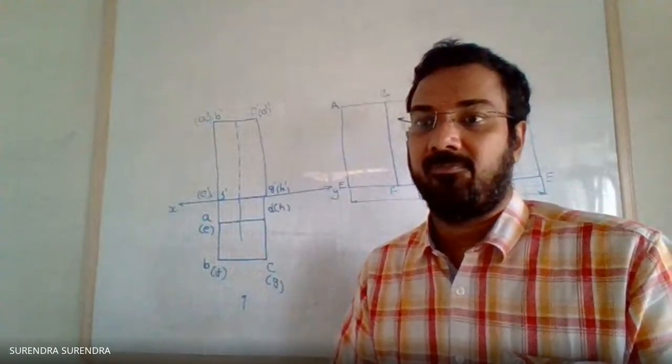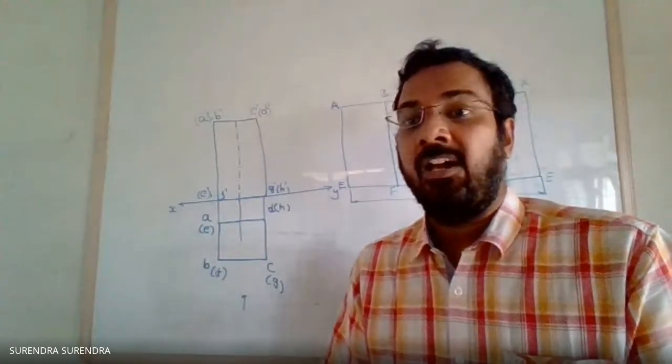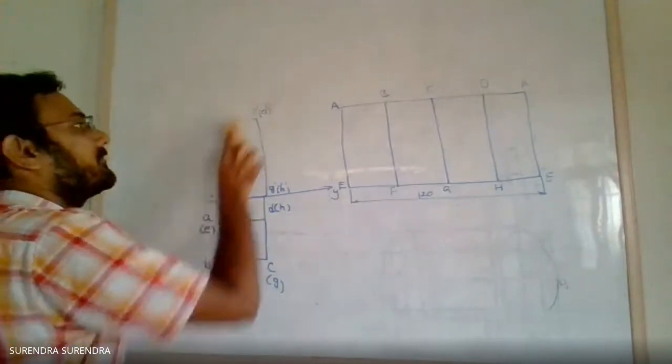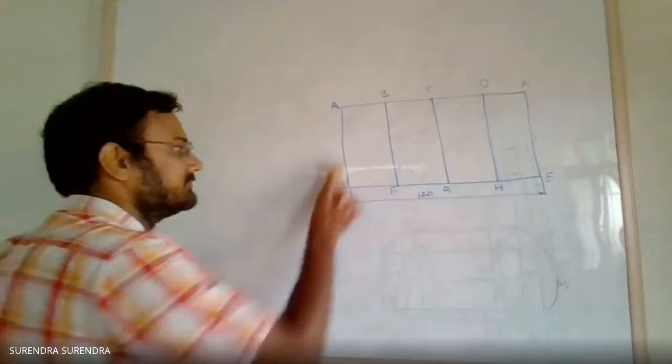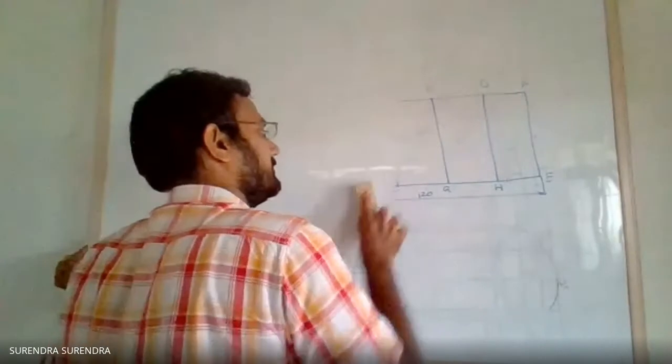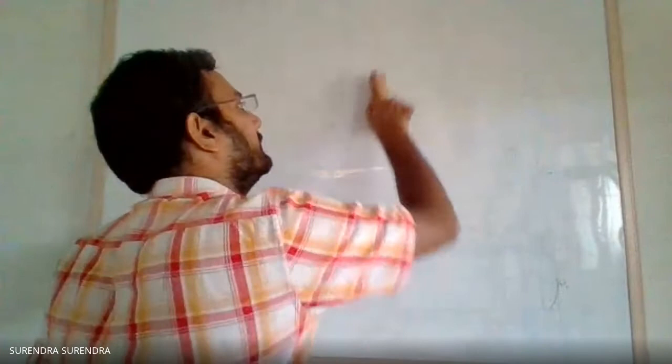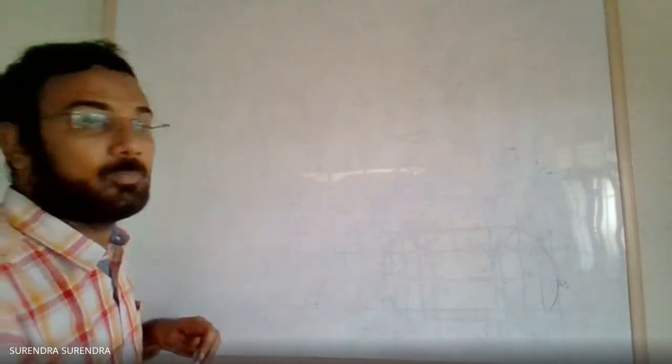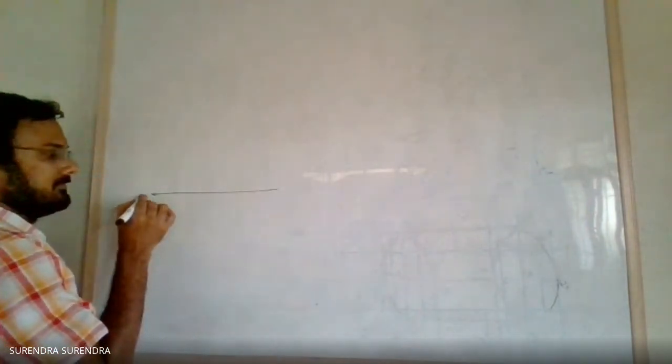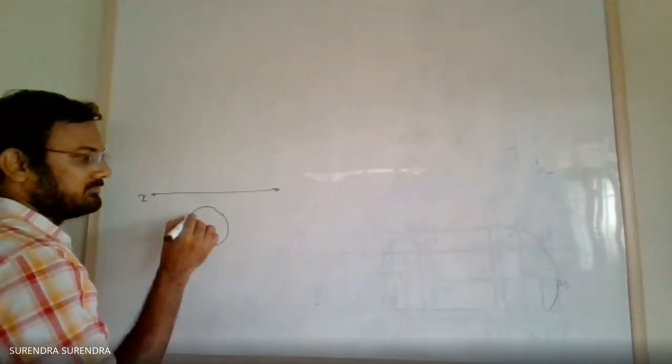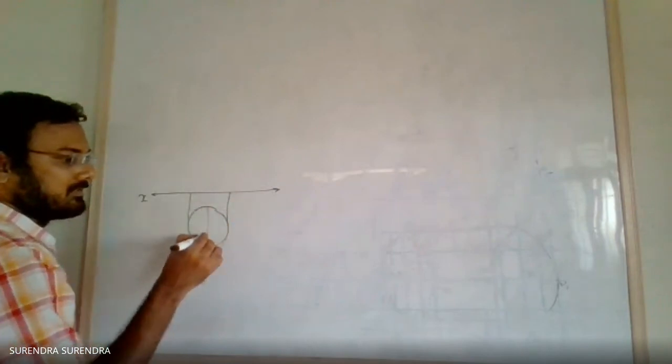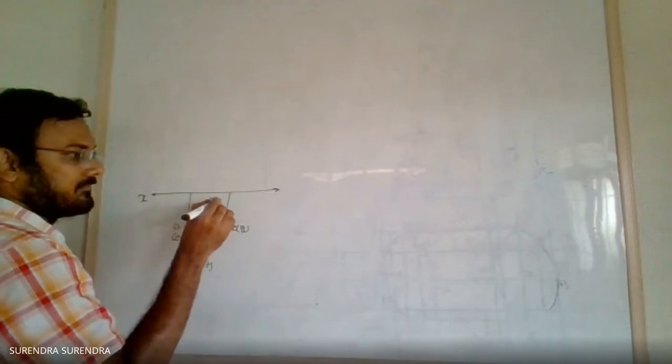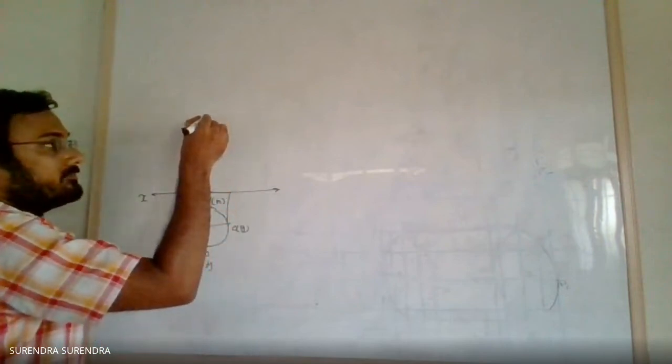Now coming to this problem, draw the development of a complete surface of a cylindrical drum diameter is 40mm and height 60mm. So first draw the cylinder in the initial position, that is drawing XY line, circle in the top view. Mark points A, B, C, D, E, F, G, H, circle with the axis.